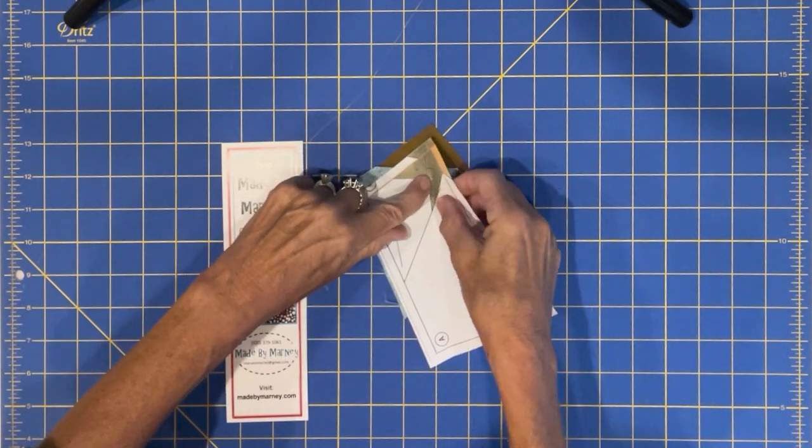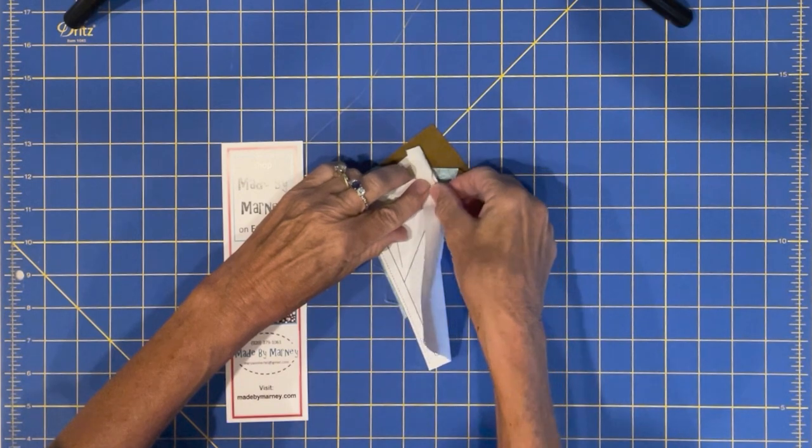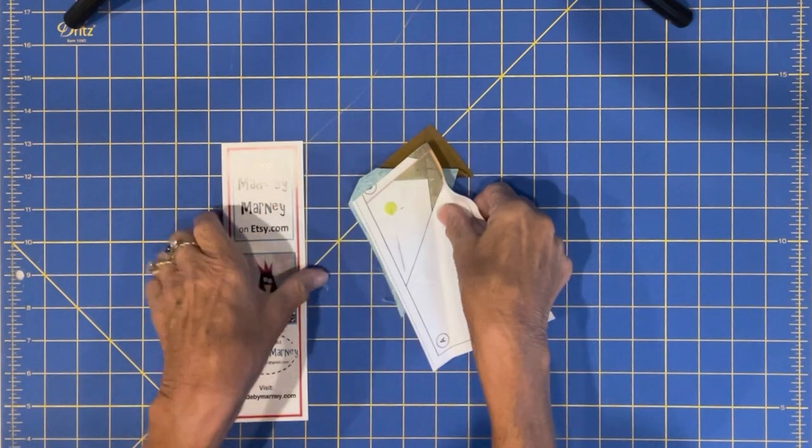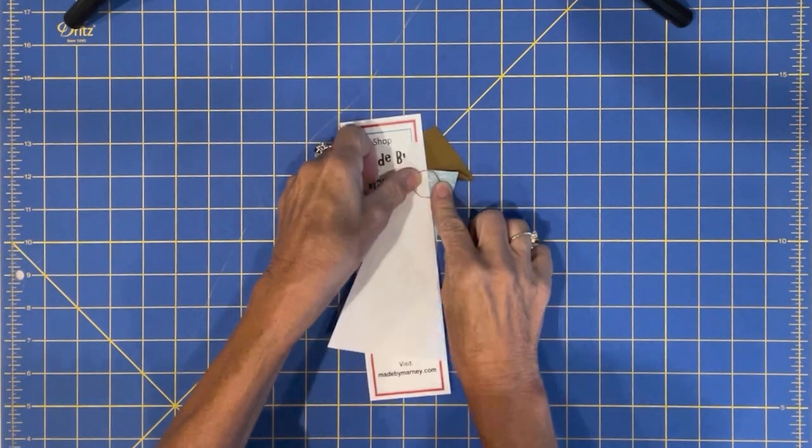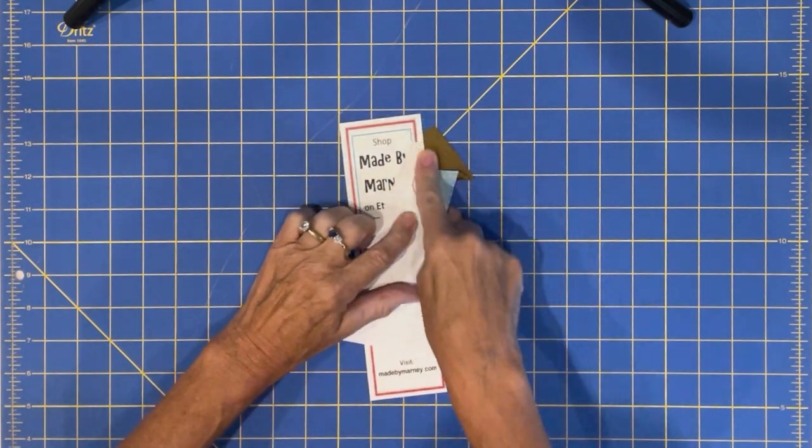So when I fold it back, I have to basically rip those two or three stitches out. So here you can see right there, it's been ripped back.